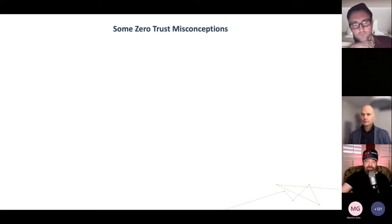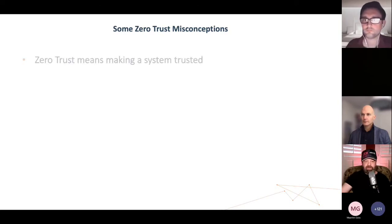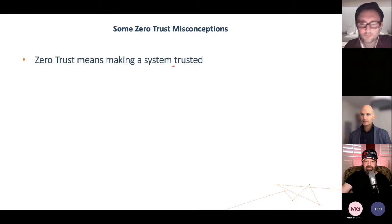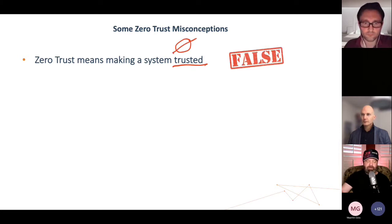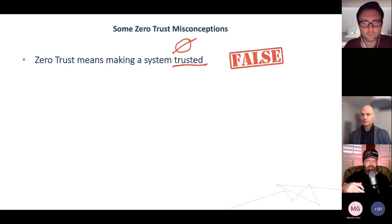Let's start with some misconceptions you may have heard about Zero Trust. First: Zero Trust means making a system trusted. How much trust should there be in a system? Zero — that's why it's called Zero Trust. So this is false. If anybody tells you they're going to make a system trusted, they don't know anything about Zero Trust. You can just show them the door.